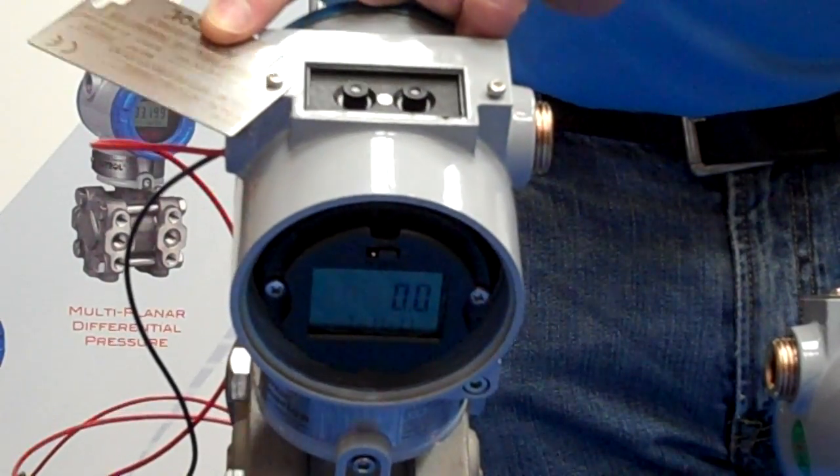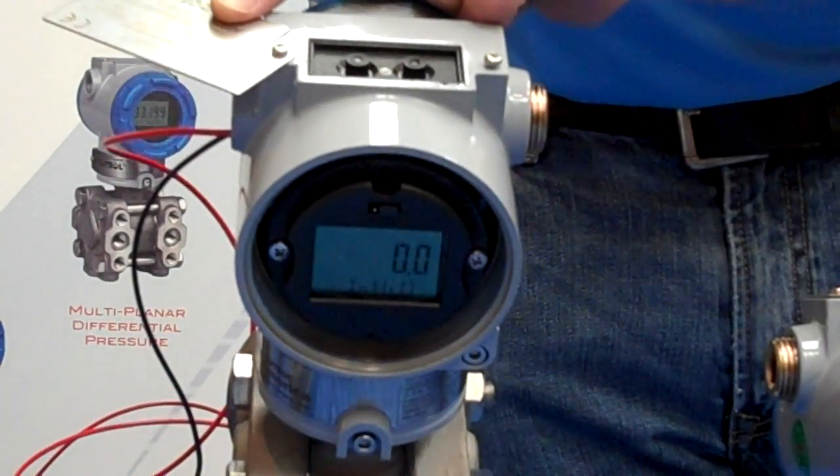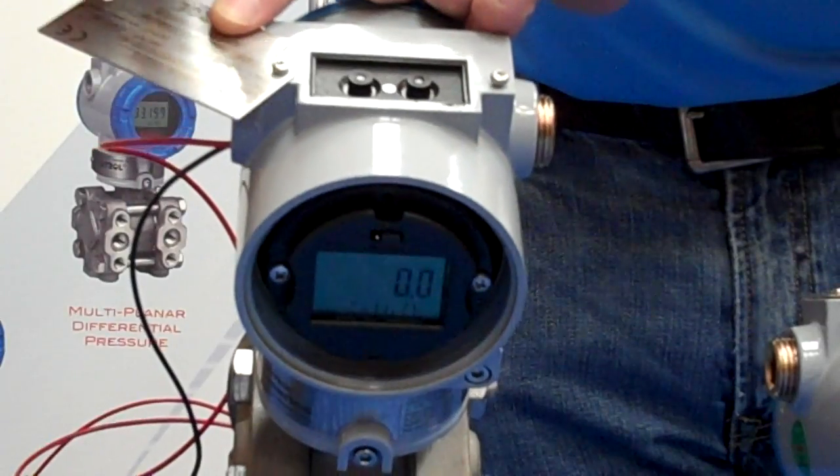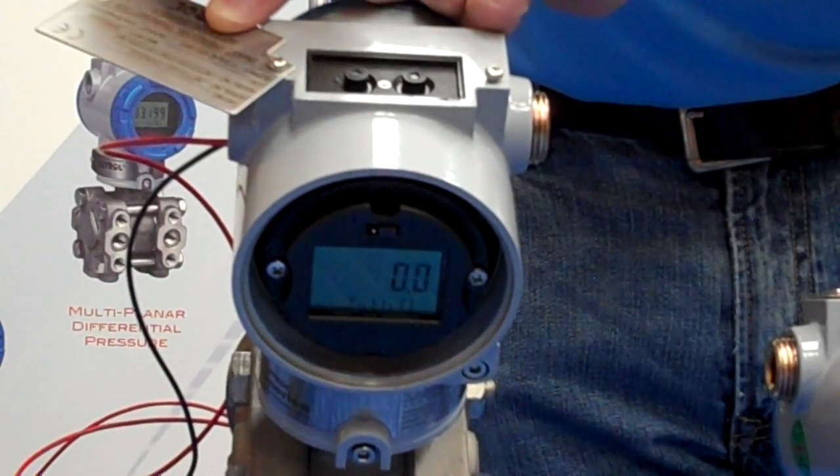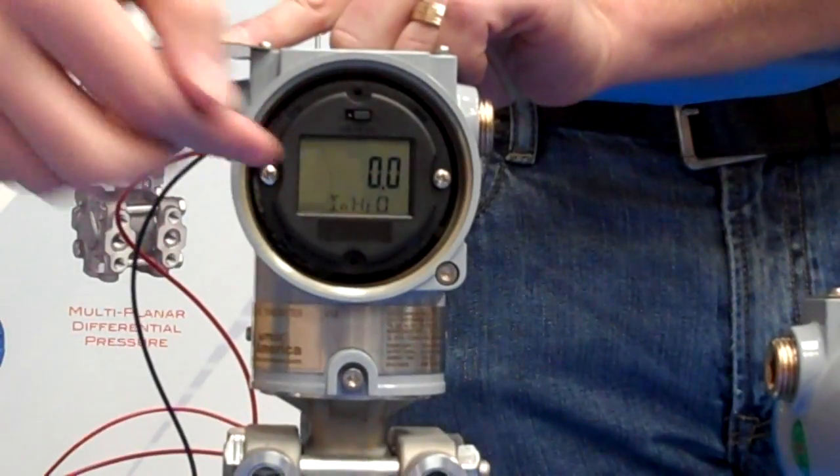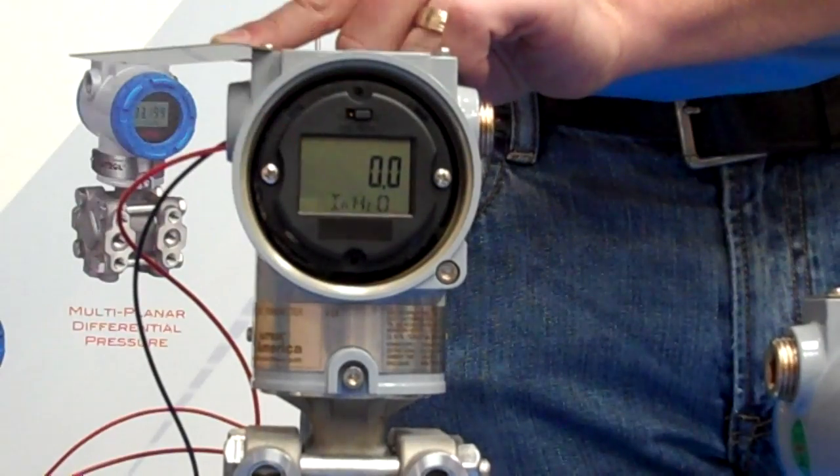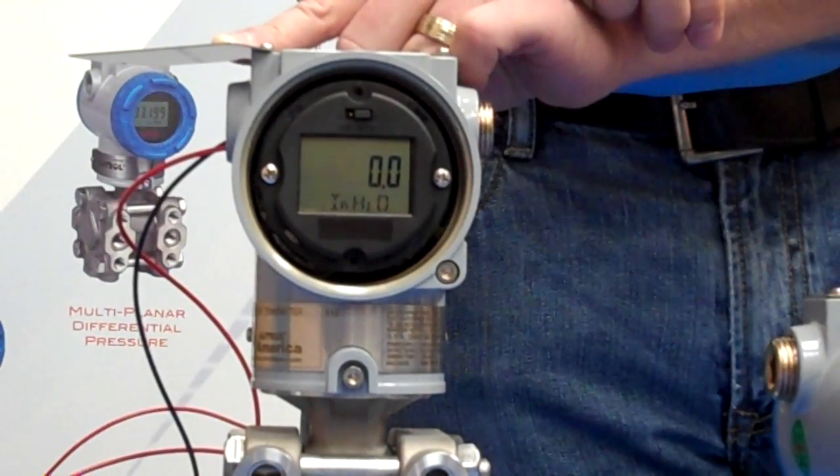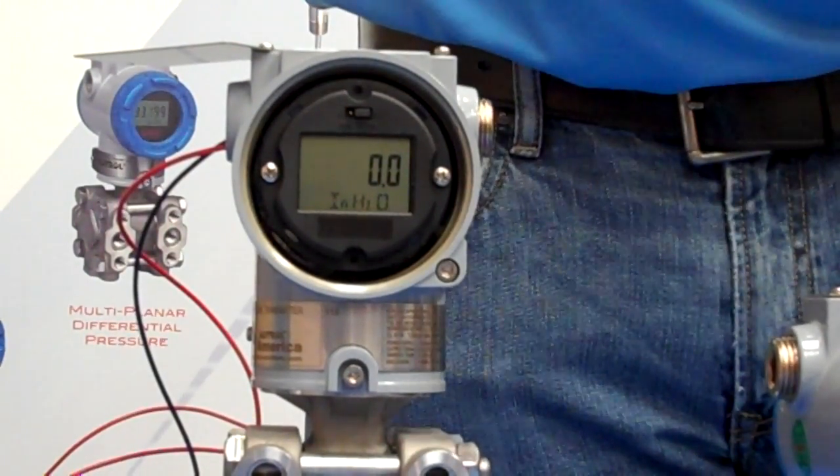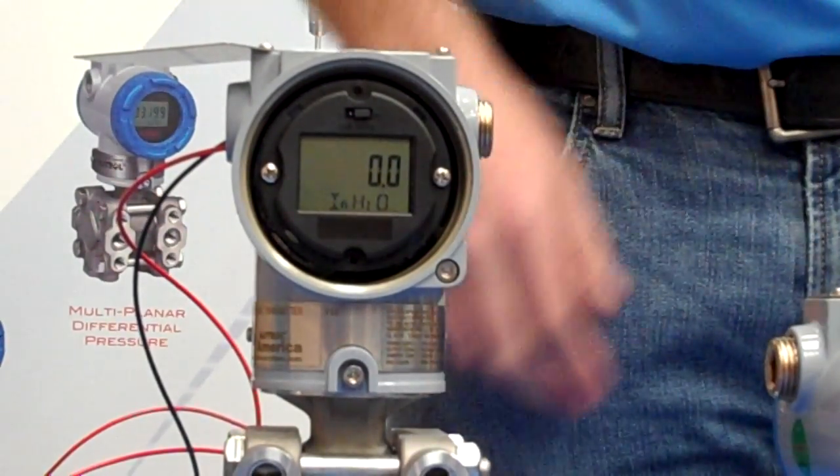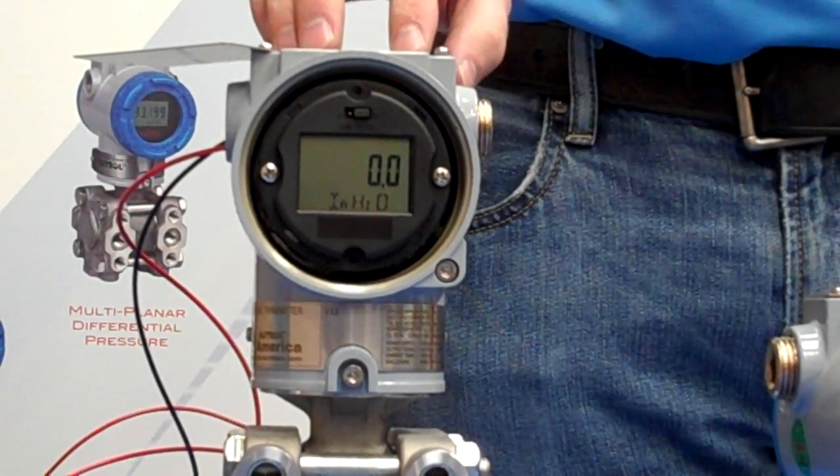So first, let's walk through basic menu navigation. To access, one thing to remember is that with Altrol, we push, we look for the change on the display, and then we release the push buttons. That is going to be important throughout all the menus and all the different programming sequences you'll encounter using the push button programming.